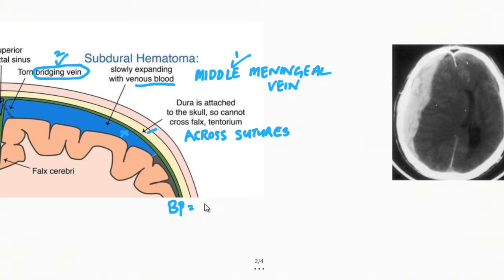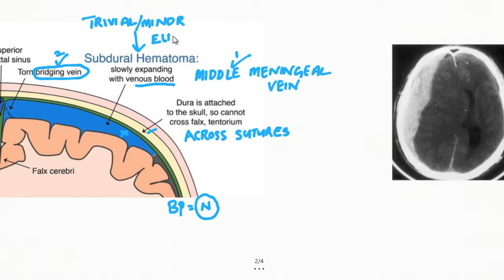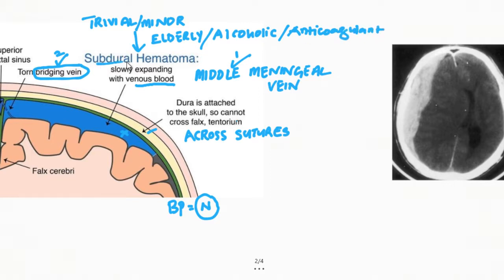Blood pressure is usually normal at the onset in subdural hematoma. It does not require severe trauma — very trivial or minor trauma can lead to subdural hematoma, especially in elderly patients, patients who are alcoholic, or patients who are on anticoagulant treatment. These groups are prone to develop subdural hematoma.